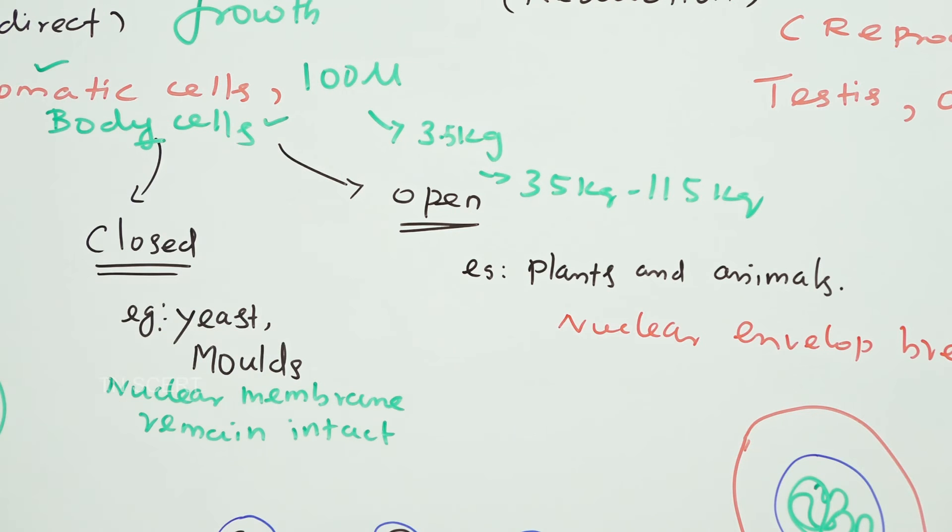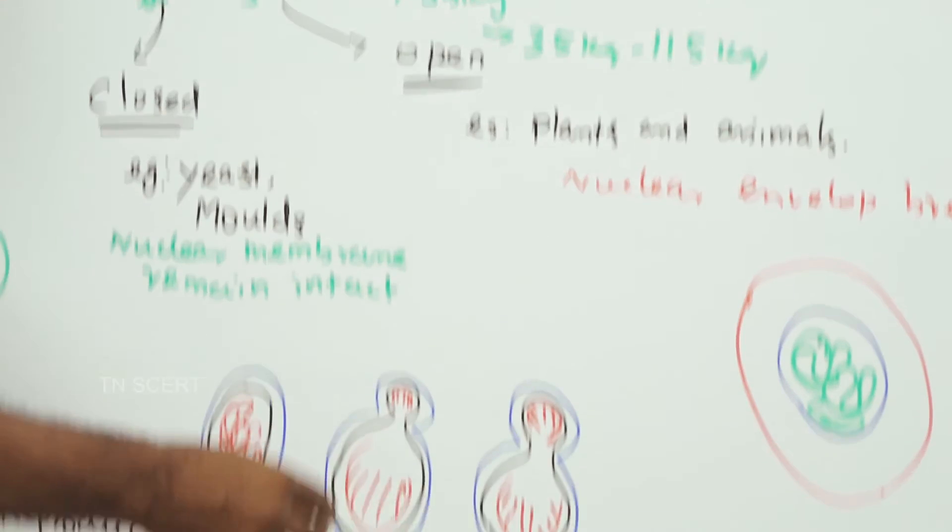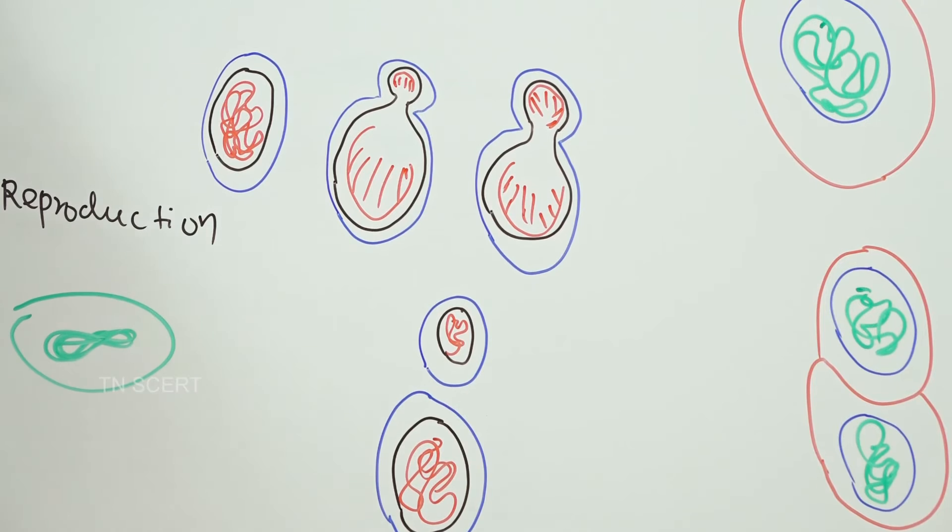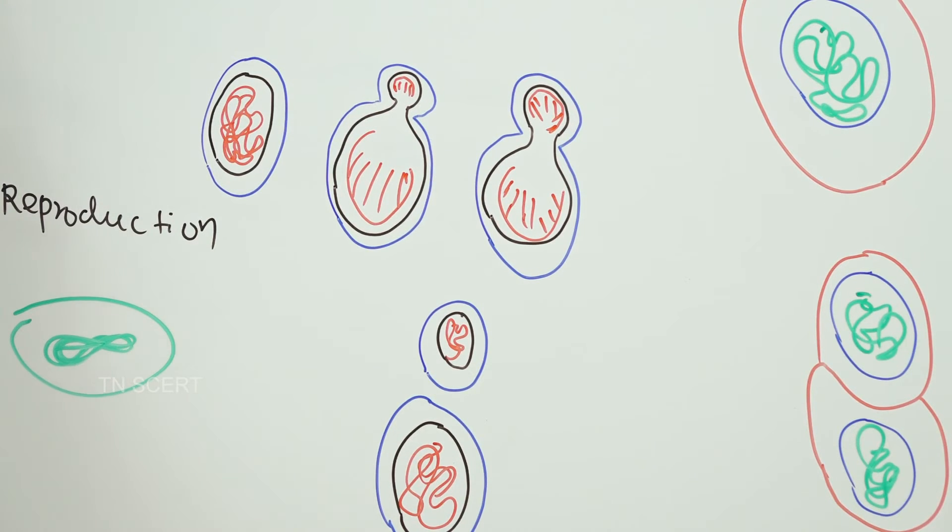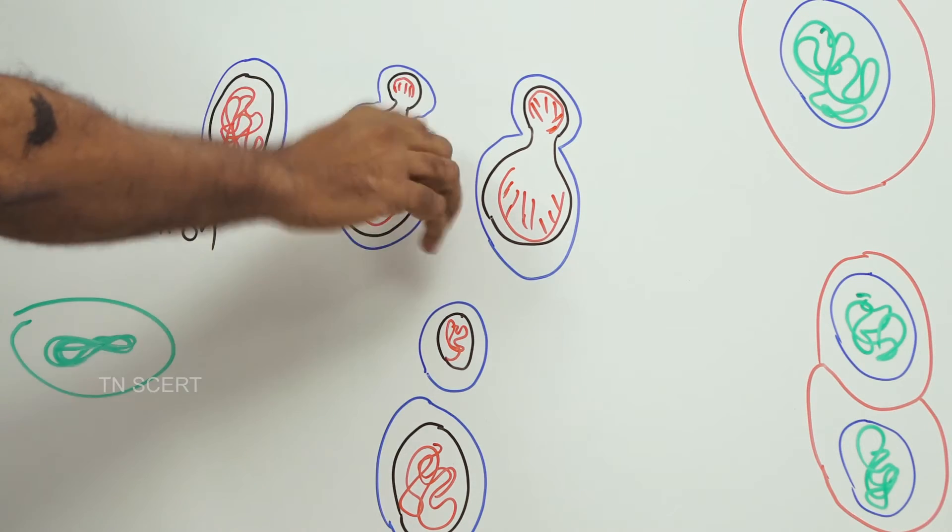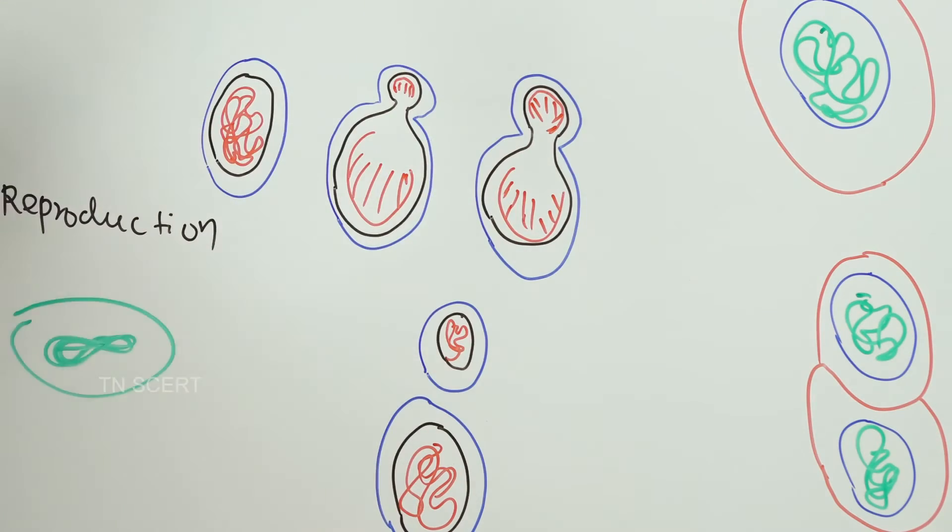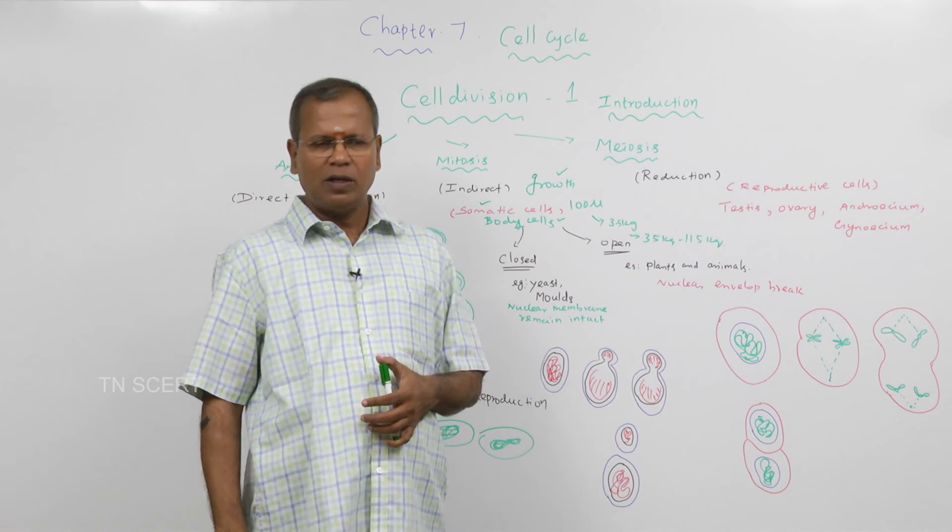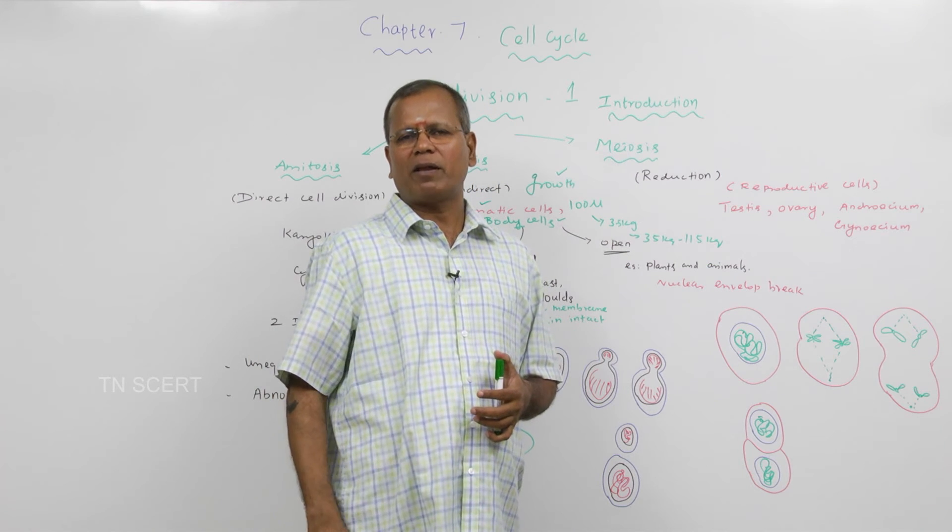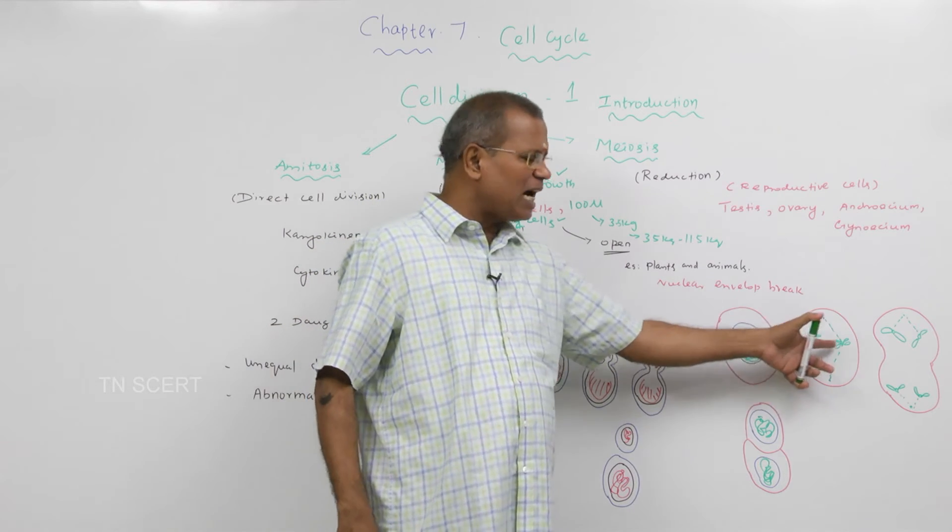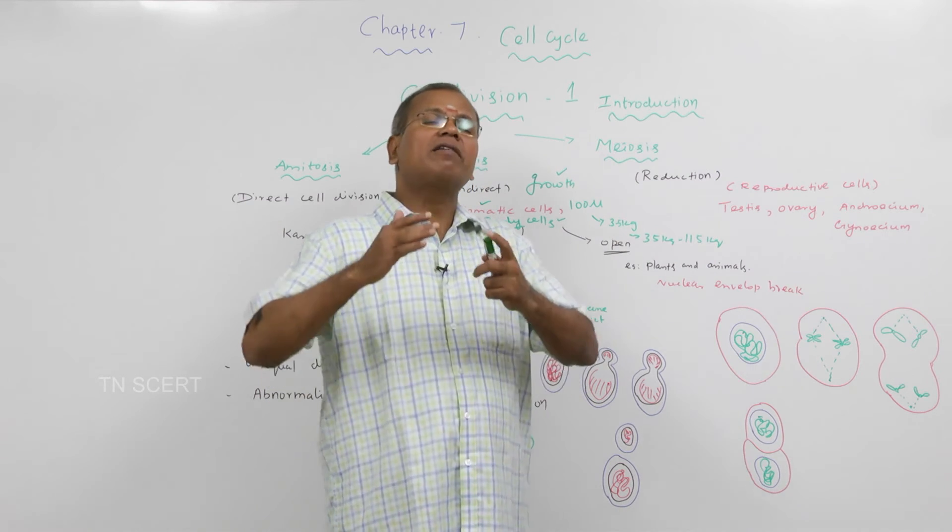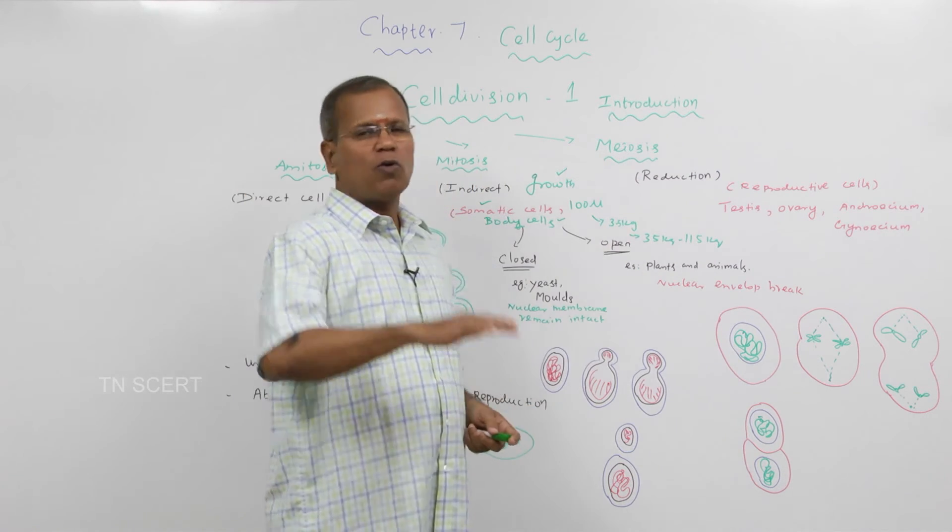Idhila laa enna naadakku. Not closed naadakku. Nuclear membrane remain intact. The separation or distribution of the genetic material takes place inside the nuclear membrane. This is said to be the closed. There is no disturbance in the nuclear membrane.